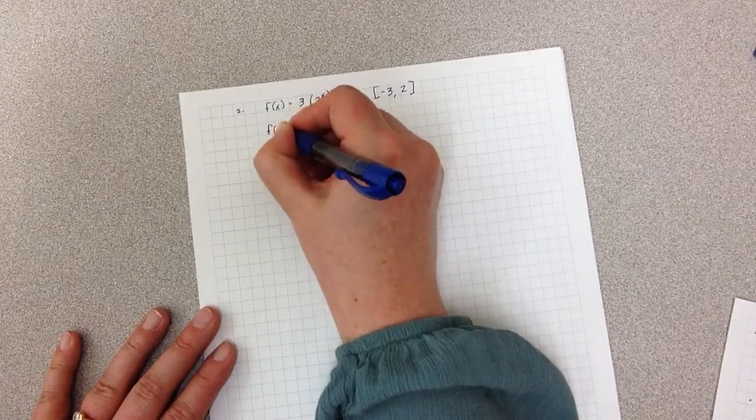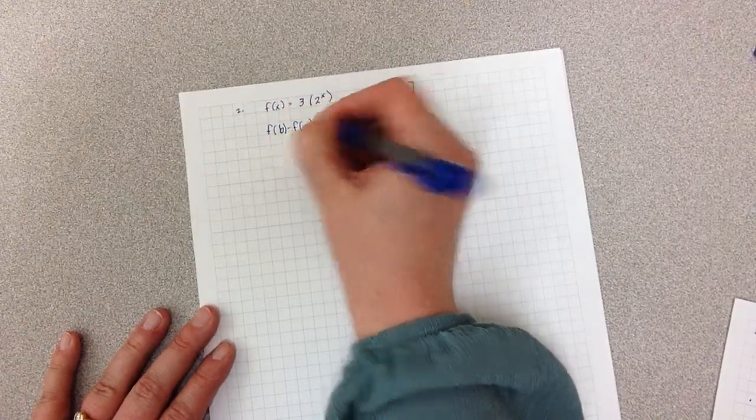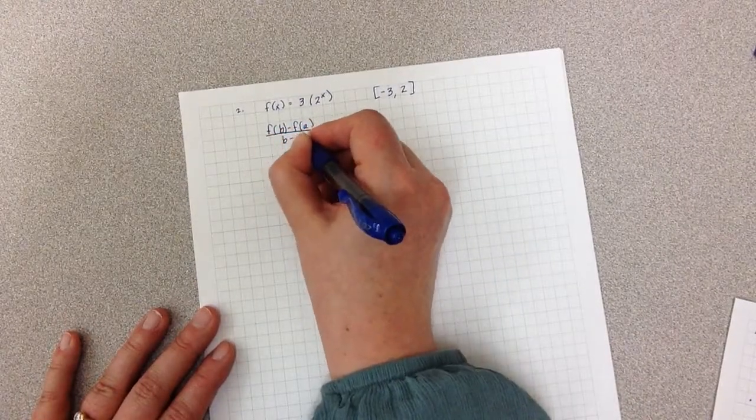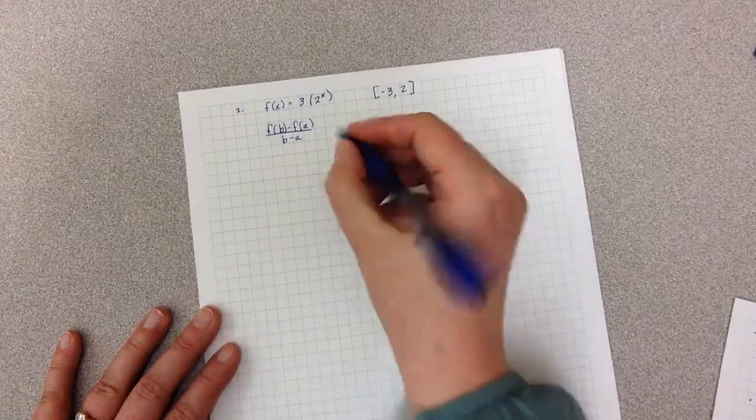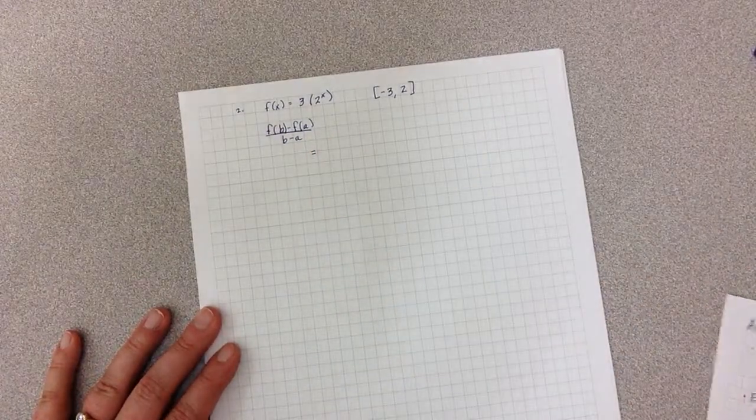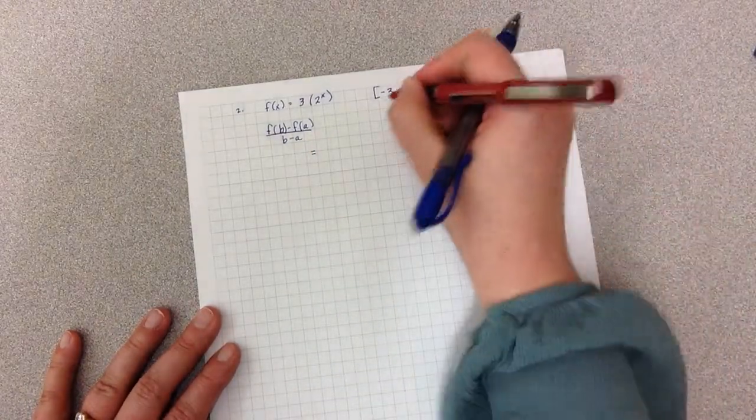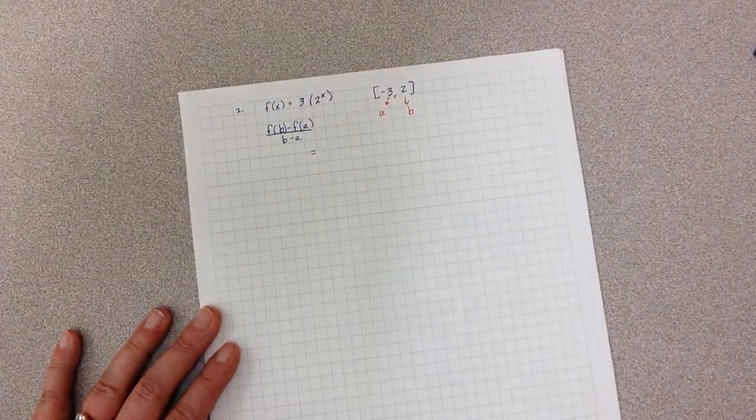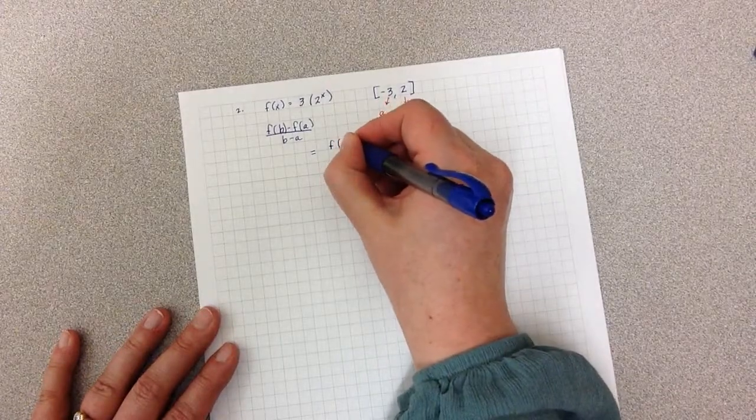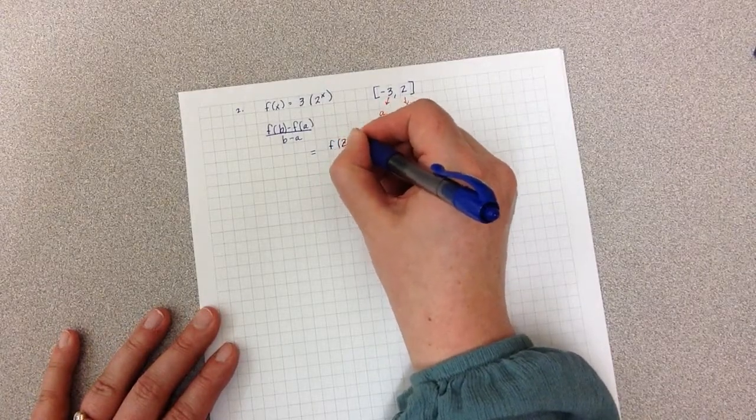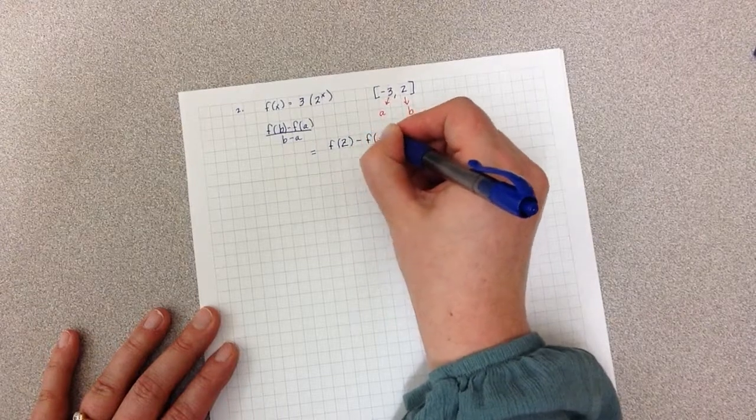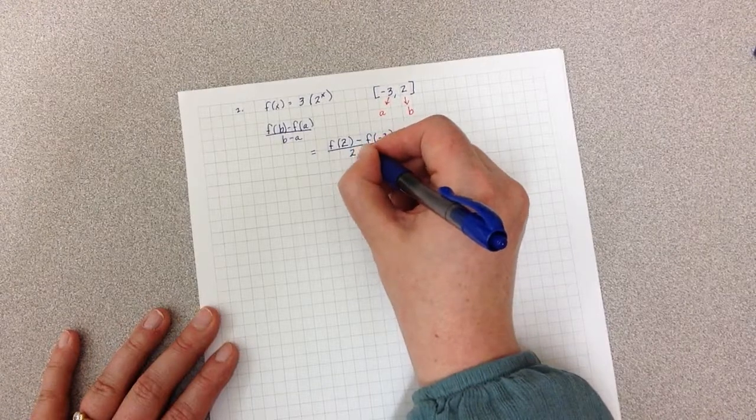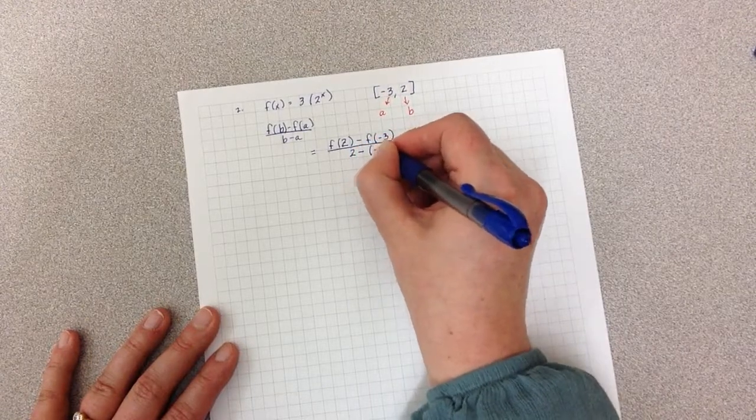Again, I start by writing the formula for the average rate of change: f(b) minus f(a) all over b minus a. And then I start to plug things in. Again, you'll remember from the previous example that the first number represents a and the second in the interval represents b. So I have f(2) minus f(negative 3) all over 2 minus negative 3.